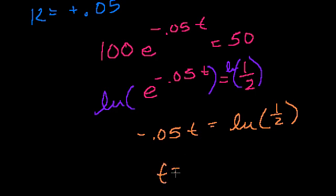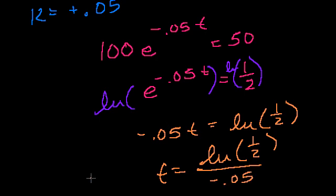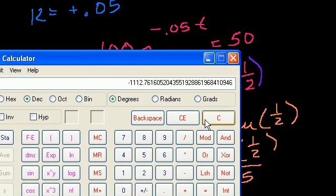And then you get t is equal to the natural log of 1 half divided by minus 0.05. So let's figure out what that is.